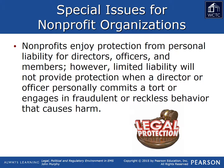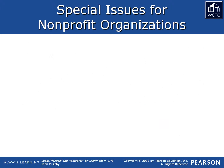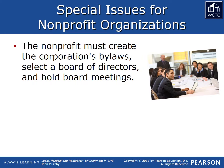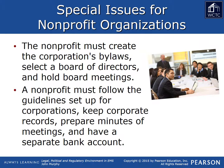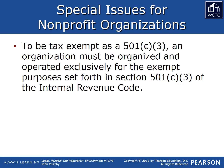If the nonprofit loses a lawsuit and the award of damages exceeds the amount of money the nonprofit has, that is the extent of the recovery available to the successful plaintiff. The directors, officers, or members are not personally liable for those damages. This liability protection does come with limits, however — there is no protection for intentional torts, fraudulent actions, or reckless behavior that causes harm. There are legal steps that must be followed to become a nonprofit entity, which includes the creation of bylaws, selection of a board of directors, and the requirement to hold board meetings on a regular basis as defined by the laws in the state. Nonprofits must follow the guidelines set up for corporations, keep corporate records, prepare minutes of meetings, and maintain a bank account separate from those who participate in the operation of the nonprofit entity.